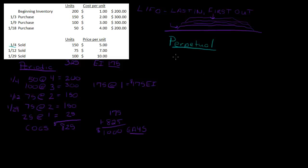Let's start with 1-4. What did I have on 1-4? I had the purchase from 1-3 and the beginning inventory. Under LIFO, I'm looking at what came in last — that's going to be the first to go out. I need 150 units, so I'm going to take the last ones that came in before 1-4, which are the units from 1-3. I'll take 150 units at $2 each. Those units are now gone — that's zero. Because the sale was on 1-4, the only things I had were the beginning inventory and the 1-3 purchase, so I took the 150 at $2, which is $300.